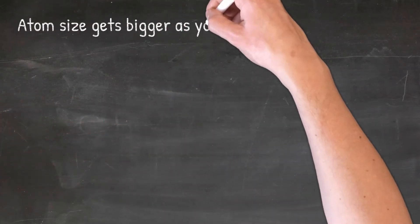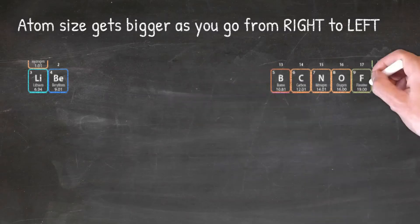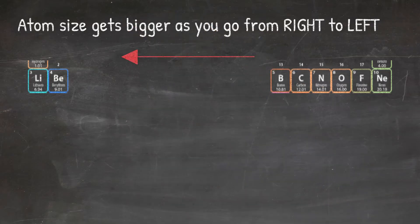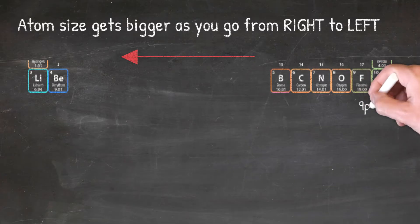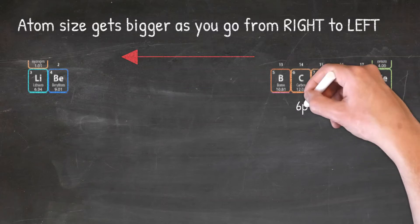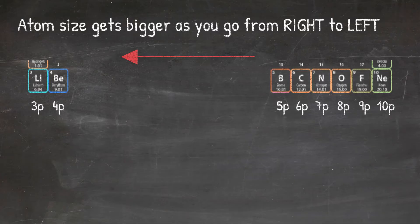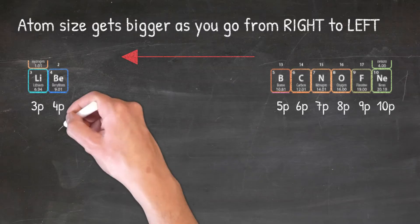Now let's look at why atoms get bigger as you move from right to left on the periodic table. We will use period two here to help us explain. As we move from right to left on the periodic table, the atomic number is going down, which means the number of protons is going down. We know that neon has ten protons, fluorine has nine protons, oxygen has eight protons, and this pattern will continue all the way to lithium, which has three protons. The fewer protons we have in the nucleus, the weaker the nucleus is. The weaker nucleus cannot hold the electrons in as well, so the electrons are able to spread out more, making the atom to the left slightly larger.